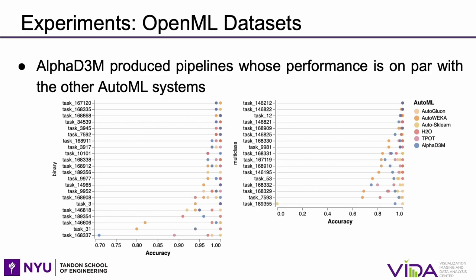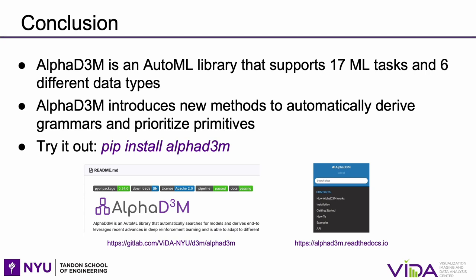In conclusion, we introduce AlphaD3M, an AutoML library that automatically synthesizes end-to-end pipelines for 17 machine learning tasks and 6 different data types. AlphaD3M introduces new methods to automatically create grammars and prioritize primitives, which are essential for effectively managing the search space. Feel free to try it out — it is available on PyPI and there is more information in our public repository and ReadTheDocs. Thank you.